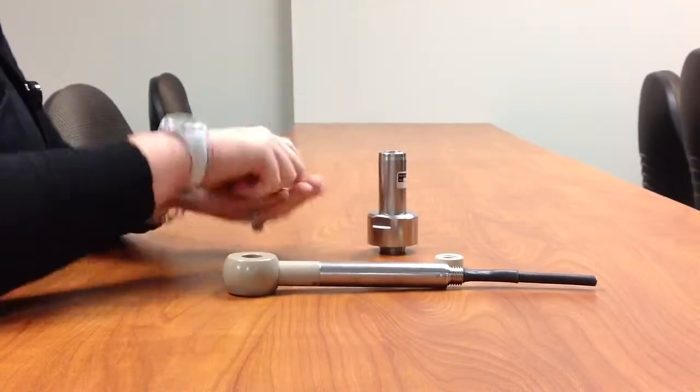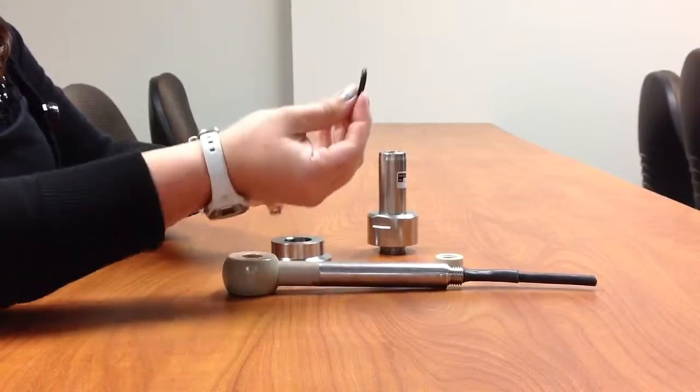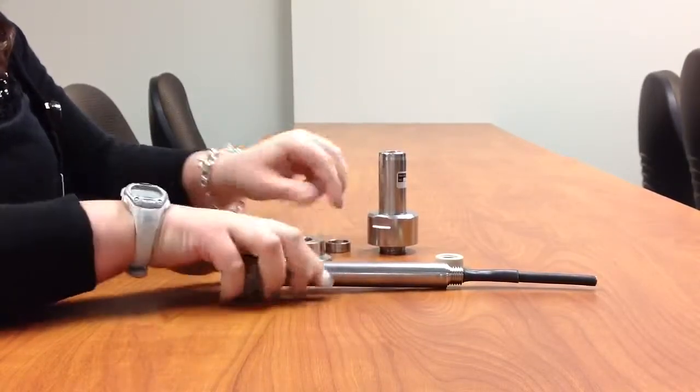There's the top piece, then here's your process connection piece, and then you have an O-ring and a sealing ring.